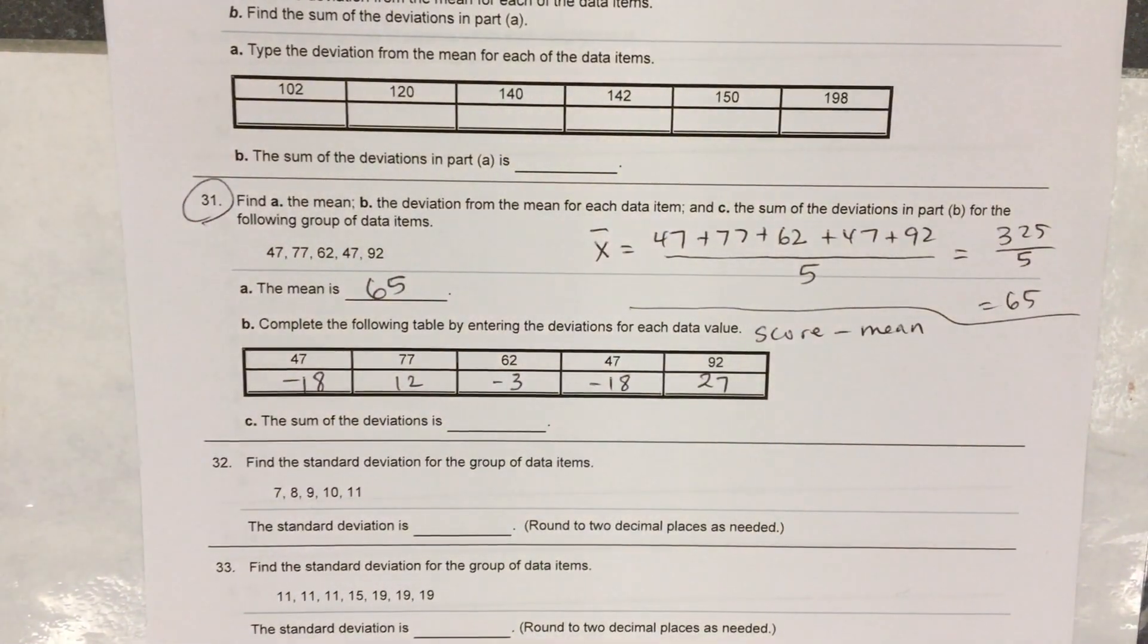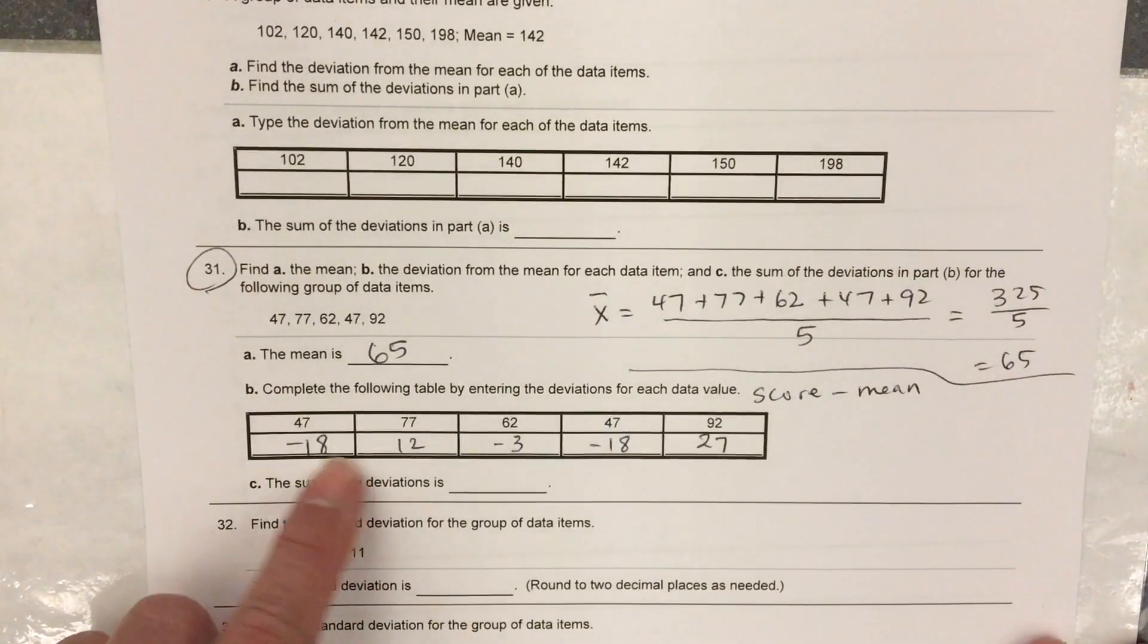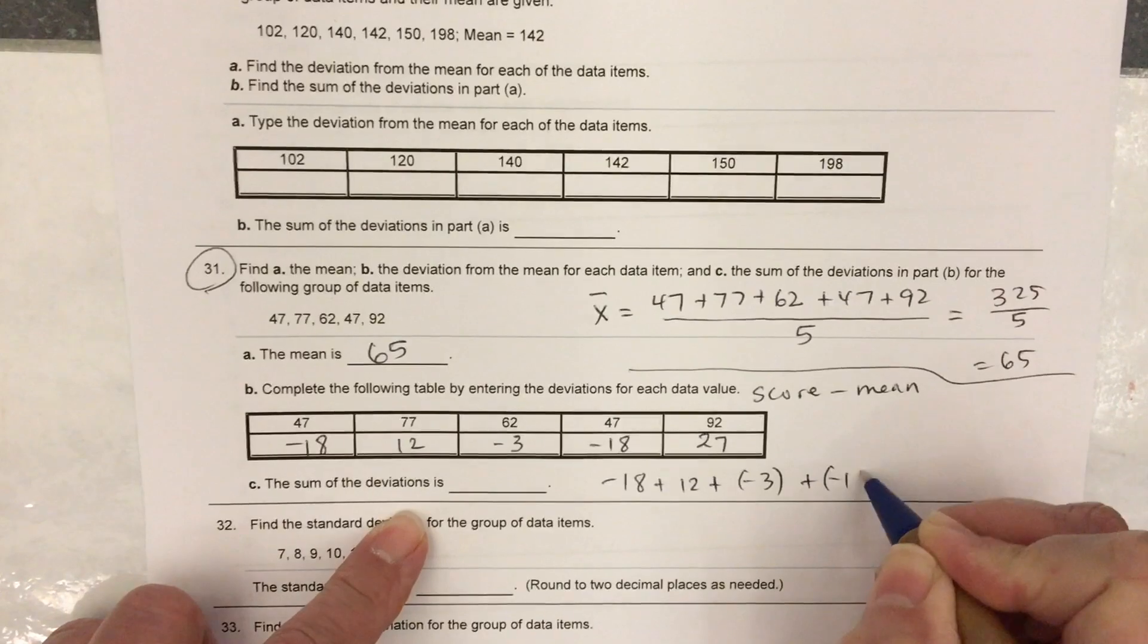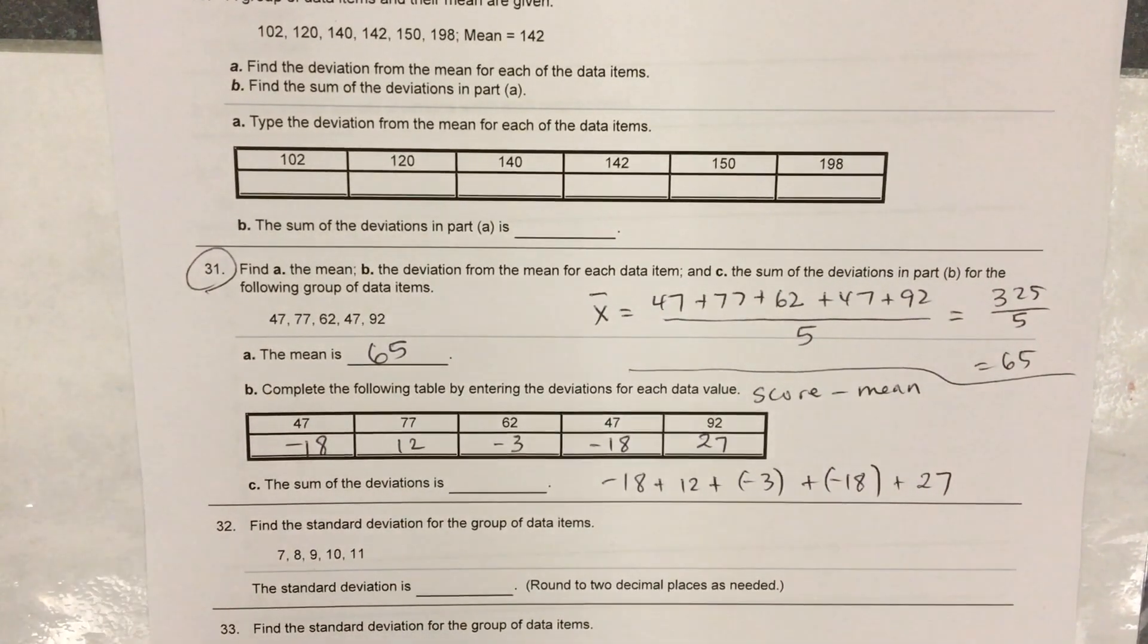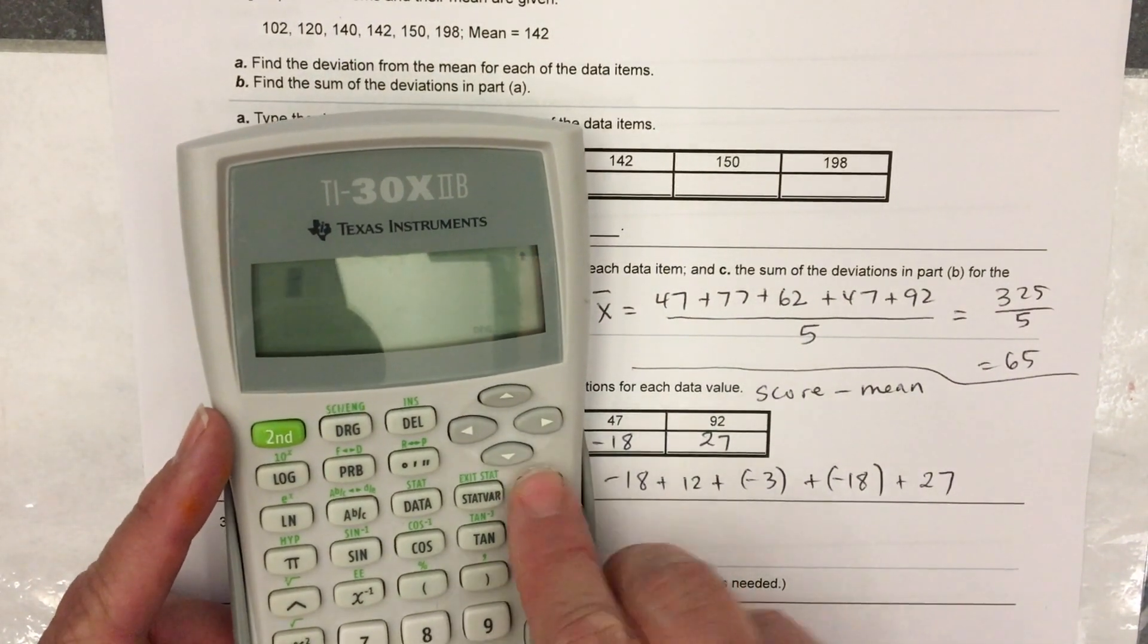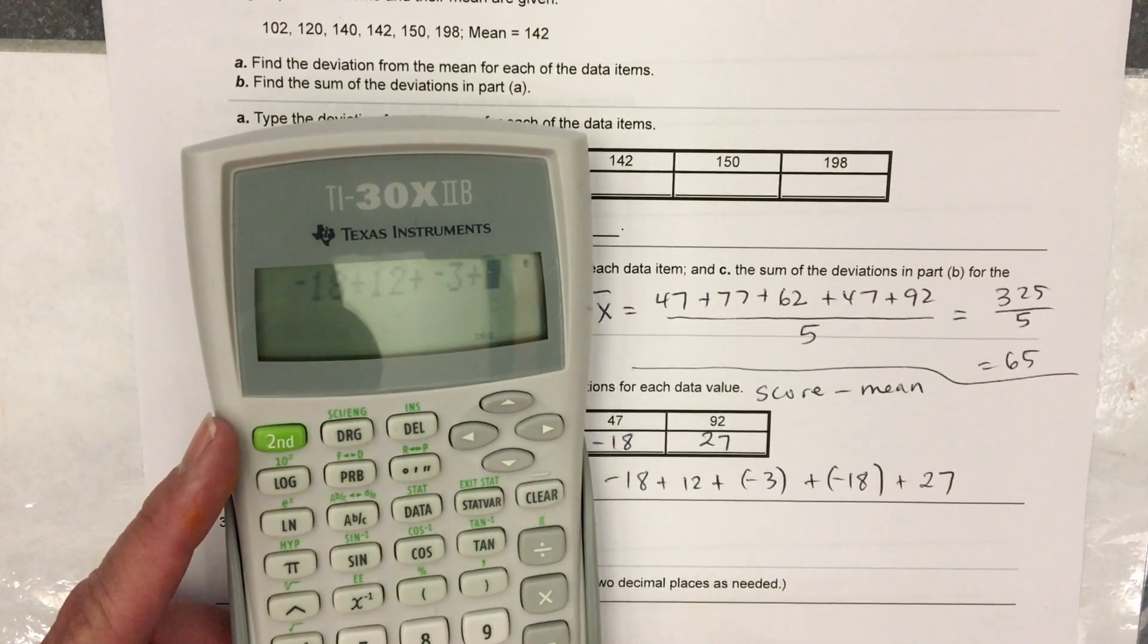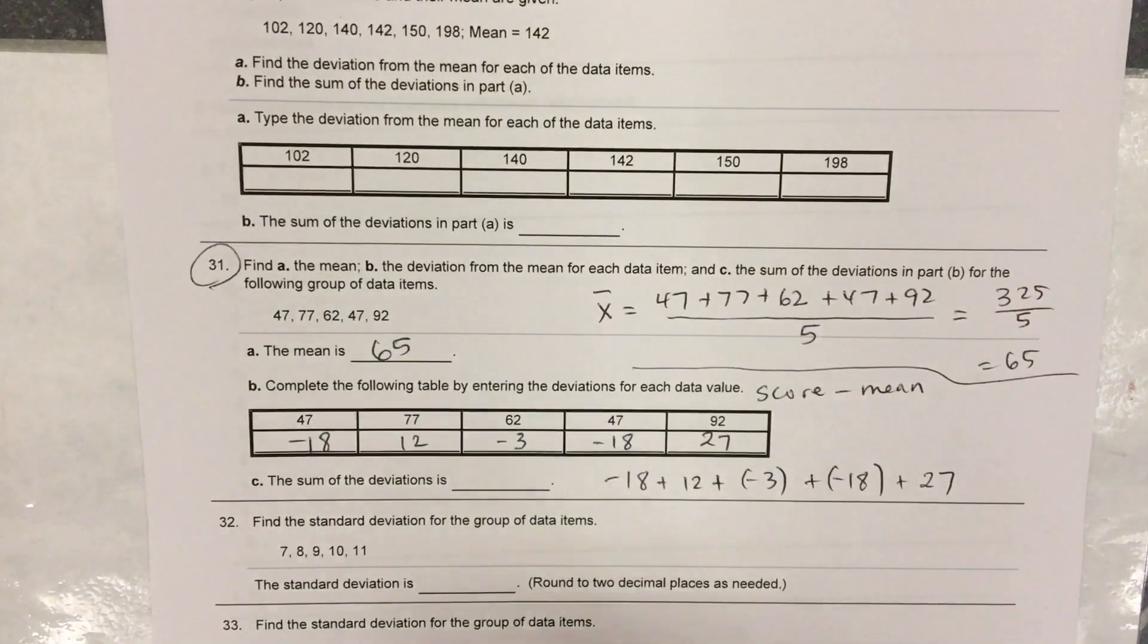Part C wants you to add up these numbers you just calculated in part B. Negative 18 plus 12 plus negative 3 plus negative 18 plus 27. What is it supposed to add to? It's supposed to add to 0. Negative 18 plus 12 plus negative 3 plus negative 18 plus 27. And it does, it adds to 0.